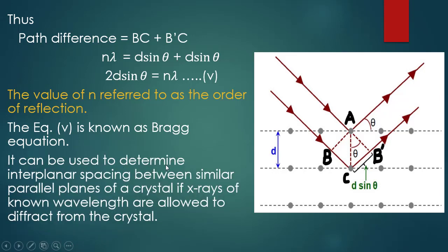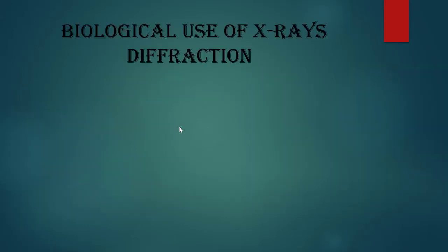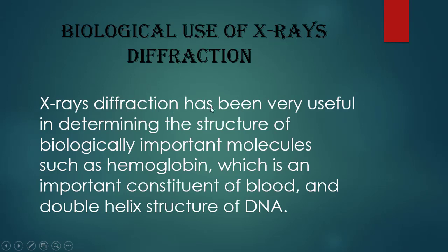The Bragg equation can be used to determine the interplanar spacing between similar parallel planes of a crystal if X-rays of known wavelengths are used. X-ray diffraction has been very useful in determining the structure of biologically important molecules such as hemoglobin, which is an important constituent of blood, and the double helix structure of DNA.